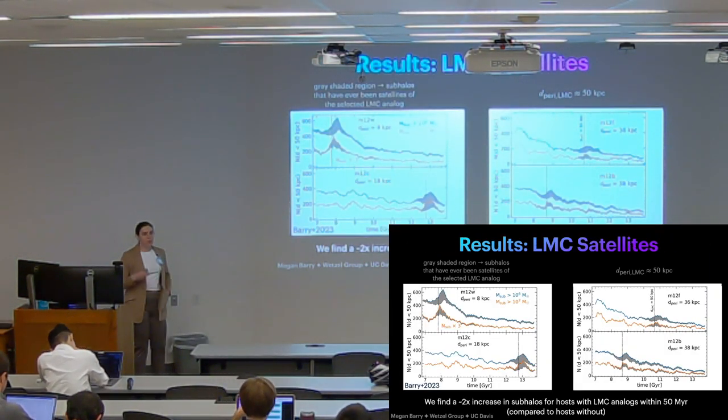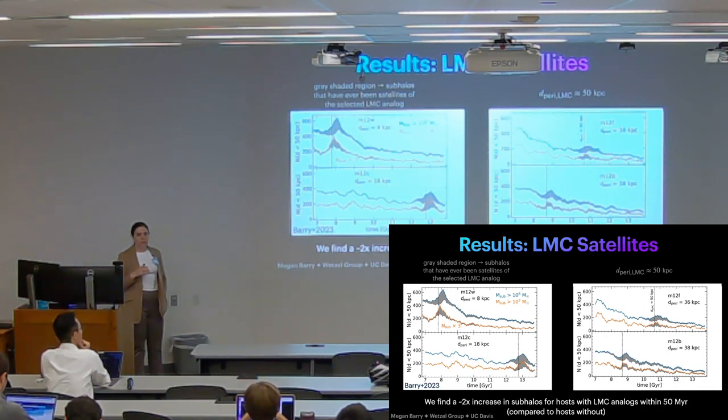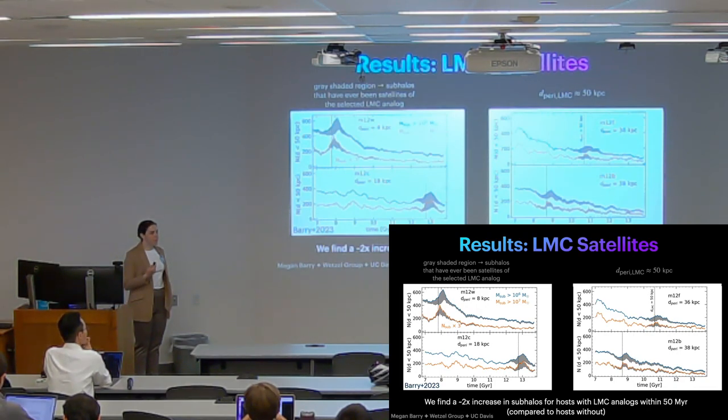If we average across these four hosts, we do find about a two-fold increase in the number of subhalos in the inner galaxy. So even if the true number isn't that high, I think we do at the very least show that it should be considered—the presence of the LMC should be accounted for when making predictions of these low mass objects.